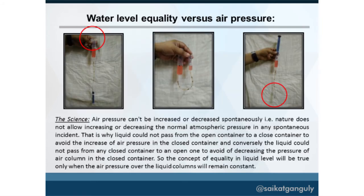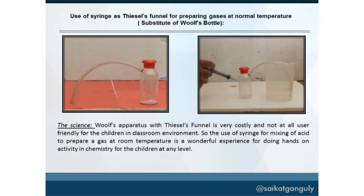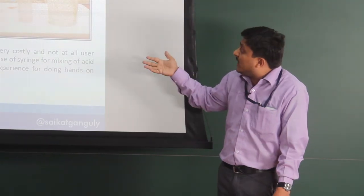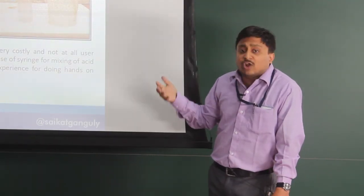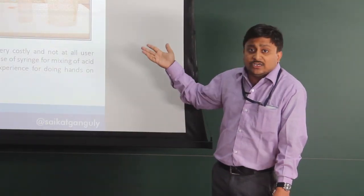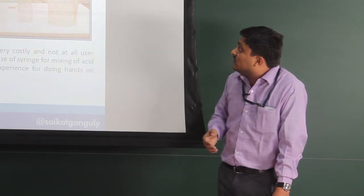The next experiment demonstrates water level equality versus air pressure. The water level will only be equal when the two ends are at equal pressure. A syringe can also be used as a thistle funnel — with the needle, you can add acids or other liquids into a reacting chamber and generate gases at normal temperature using this apparatus.